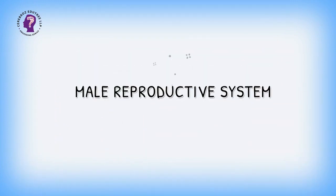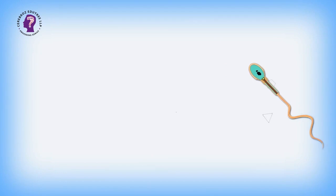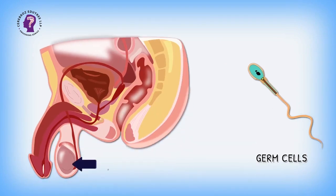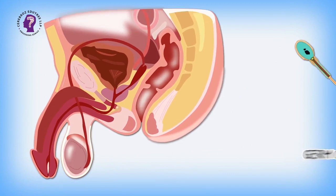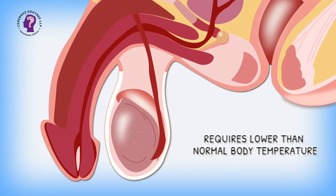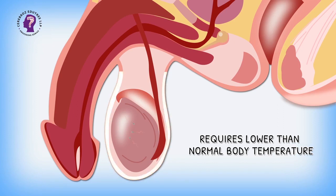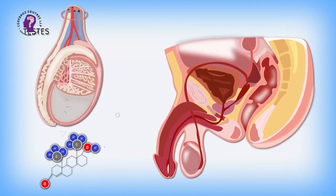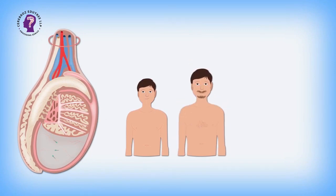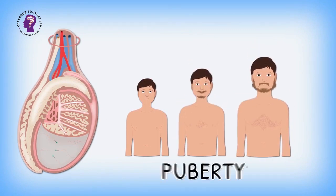Male Reproductive System: The formation of germ cells or sperms takes place in the testes, which lie outside the abdominal cavity in the scrotum, because sperm formation requires lower than normal body temperature. Testes secrete testosterone, which, in addition to regulating sperm formation, is also responsible for bringing about physical changes during puberty.